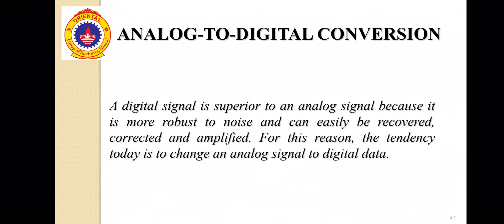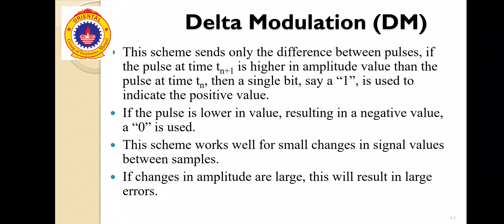To convert analog signal into digital data, we are using two methods. First is PCM, Pulse Code Modulation, and second is DM, Delta Modulation. In the last lecture, we studied about PCM. In today's lecture, our topic is Delta Modulation.